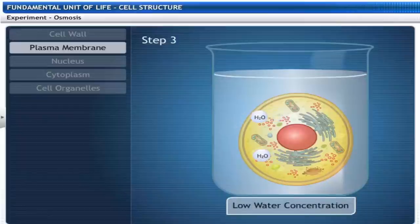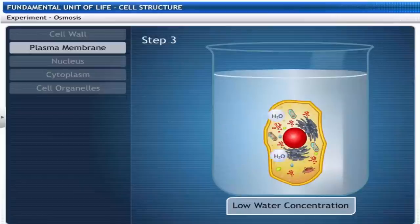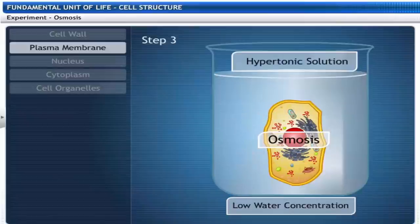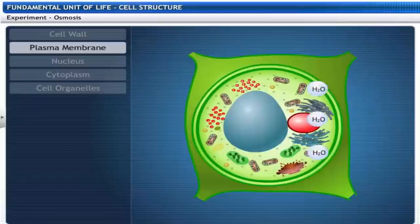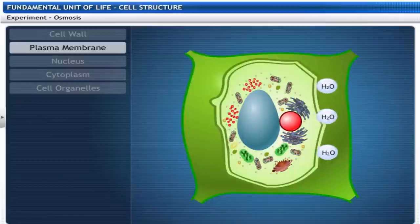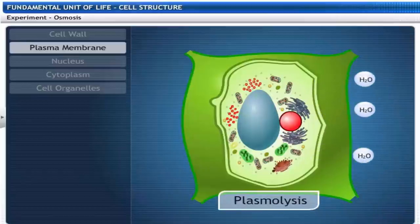If the medium has a lower concentration of water than the cell, the cell loses water by osmosis and then shrinks. Such a solution is known as hypertonic solution. When the cell loses water through osmosis, the cell contents shrink away from the cell wall. This is known as plasmolysis.